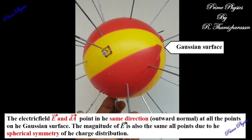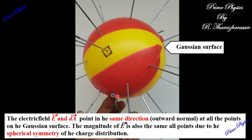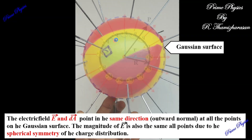On this Gaussian surface, consider a small area element dA. The surface normal direction is the dA vector. The electric field is radially outward in the same direction as dA, so the angle between them is 0.